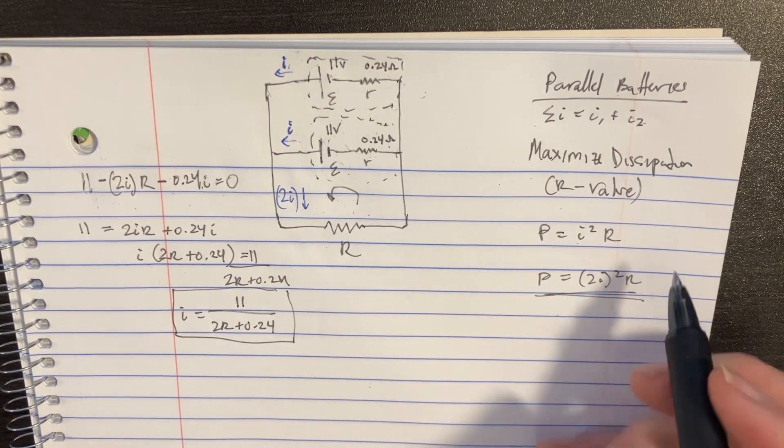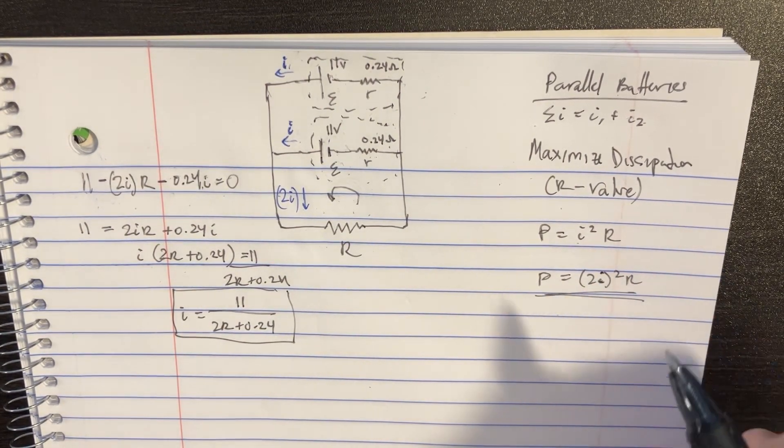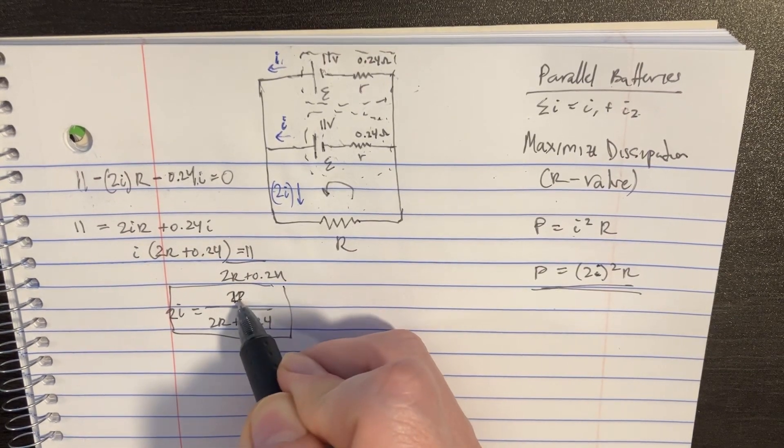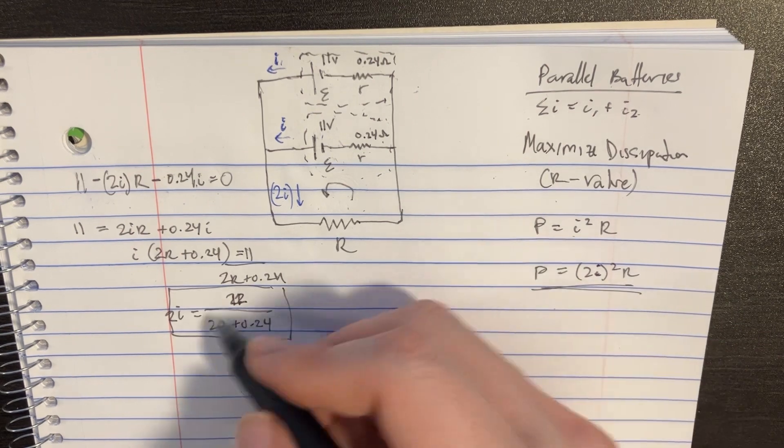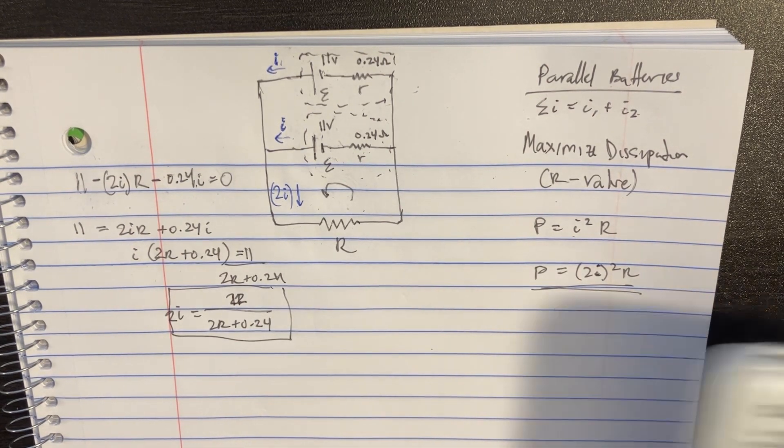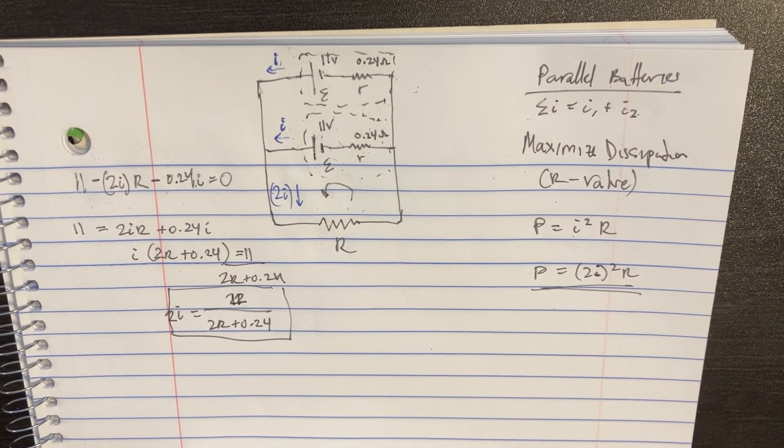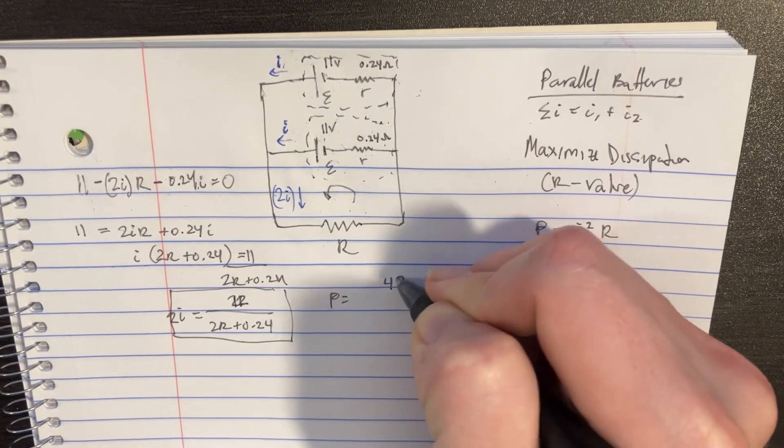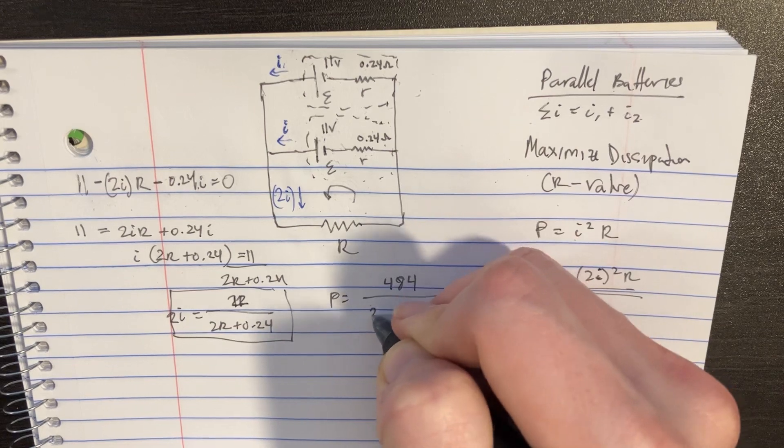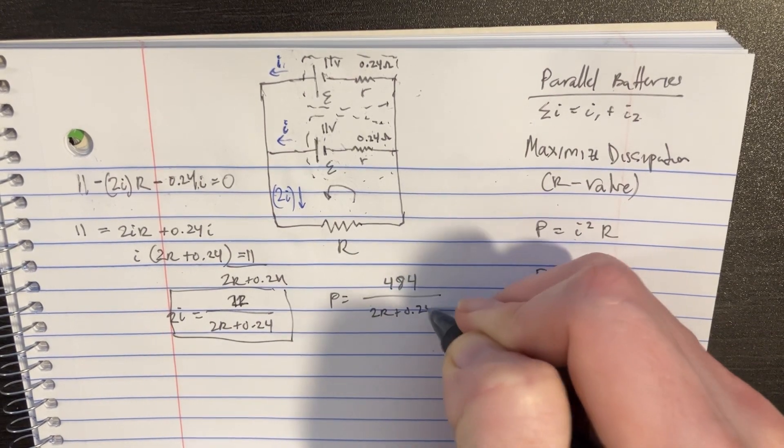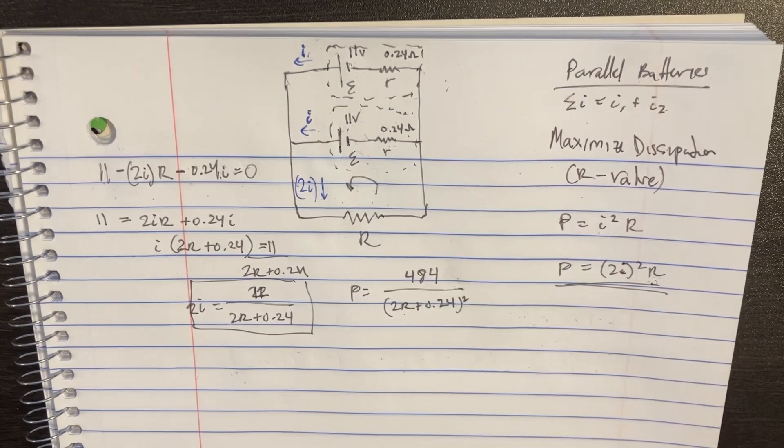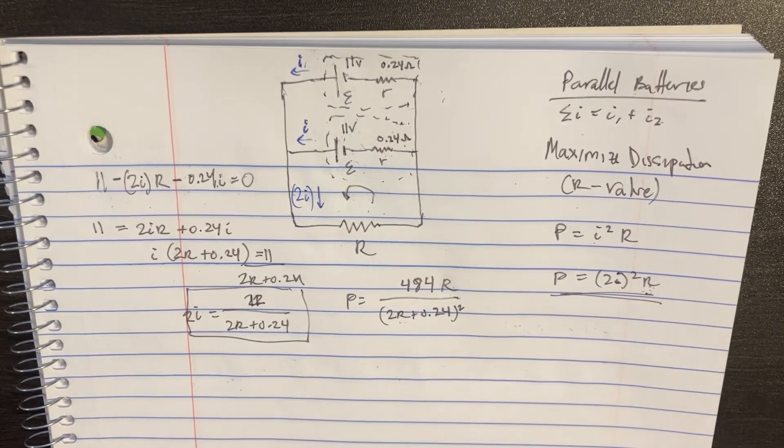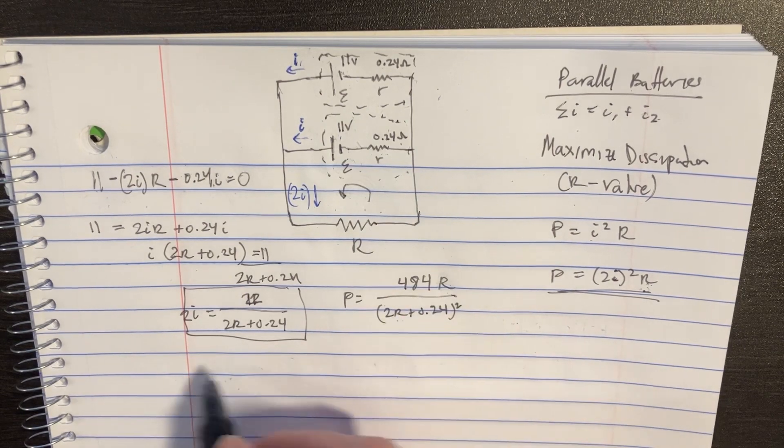Now let's go back to this equation. If we were to multiply this by 2, we'll get 2i equals 22 on top, and then now we could square that, so it would be more like 22 squared is 484. So we'll have P equals 484 divided by 2r plus 0.24 squared. All right, we're almost done. Let's go ahead and multiply this by r just like we have there, and now we're going to take the derivative of that over here by saying low d high, it's going to be 2r plus 0.24.